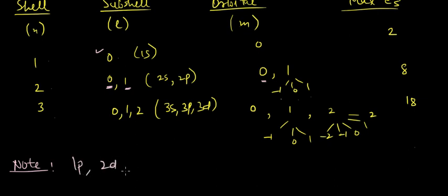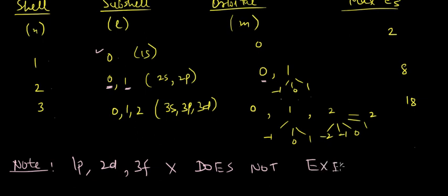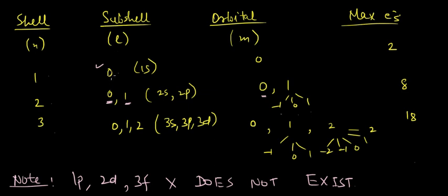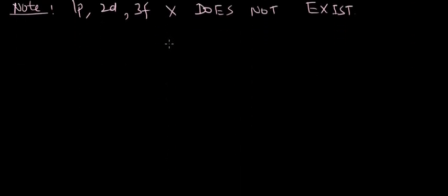Note that subshells like 1p, 2d, and 3f do not exist. For a given value of n, the subshell range is only 0 to n-1, so for n=1 only l=0 exists, meaning only 1s is supported.